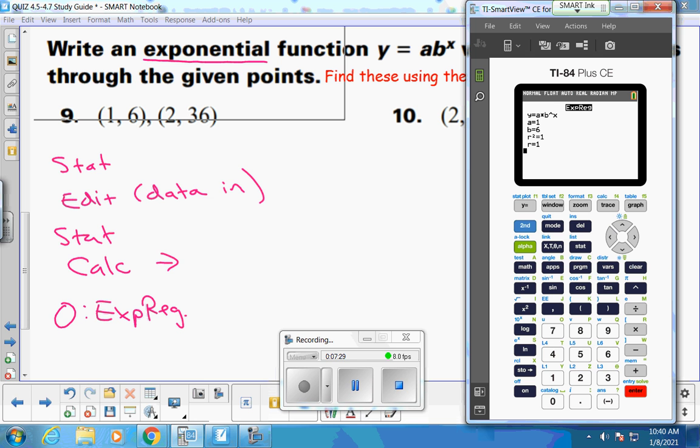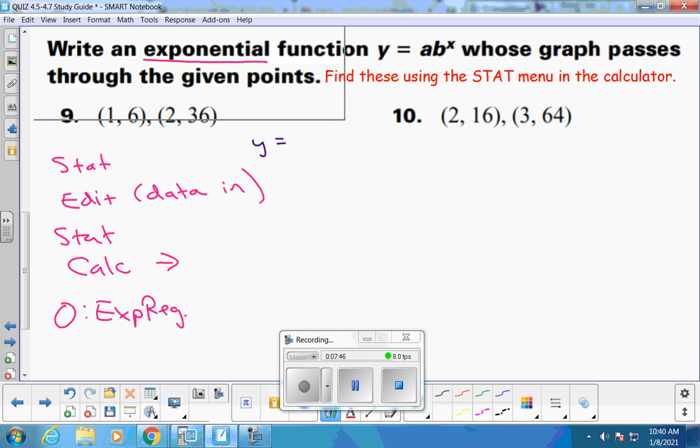Now, if I just write a equals 1, b equals 6, I'm not going to get full credit. I need to write the actual equation out. So use this equation here that the calculator is providing to you right here and put that a value of 1 in and the b value of 6 in. So it's y equals 1 times 6 to the x. That's what we want. You don't even really need the 1. It could just be y equals 6 to the x.